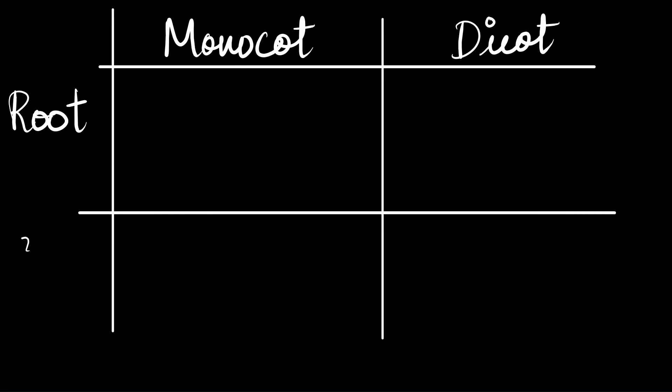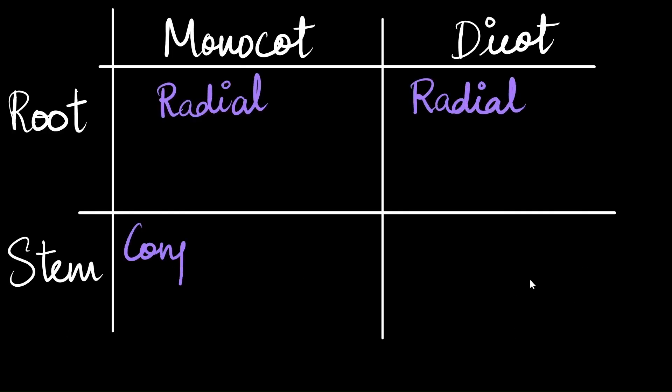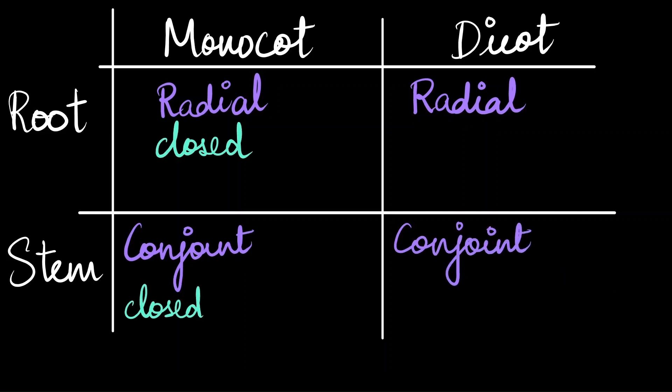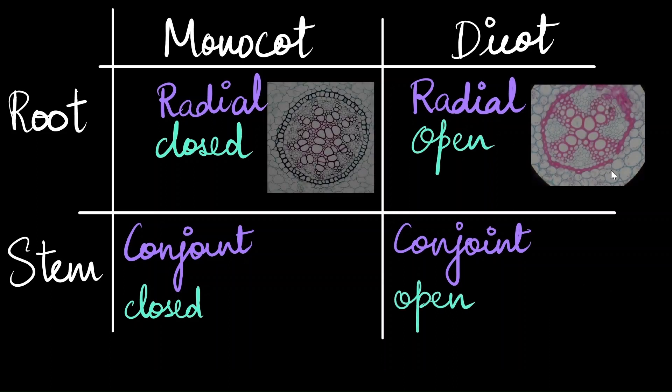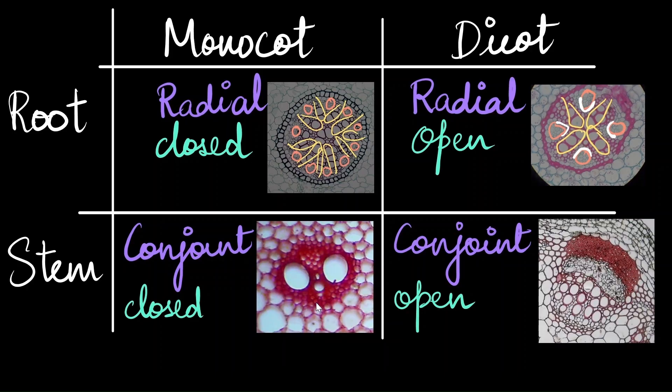Let's try to summarize what we saw till now. So we have the monocots and dicots and we are comparing them across the root and the stem. In the root, both these show radial arrangement, whereas in the stem, they show a conjoined arrangement. Monocots are closed systems because they don't have cambium, whereas dicots are open systems. So you remember the pictures we saw earlier. So this is the xylem followed by phloem and here again we have xylem and the phloem. We can see the cambial tissue in between the xylem and phloem. In case of the stems, this is the xylem and we have a phloem. This is xylem, phloem with the cambial tissue present in between.